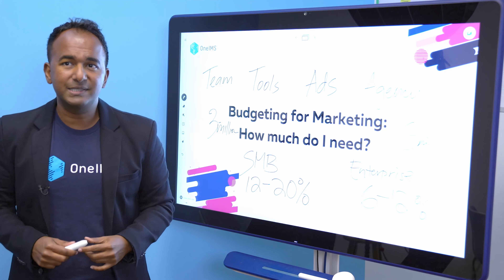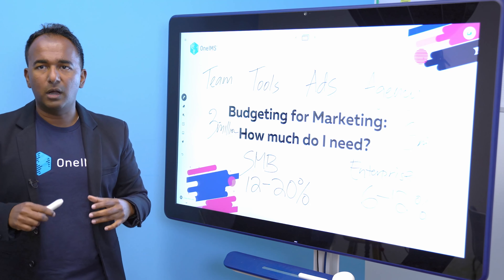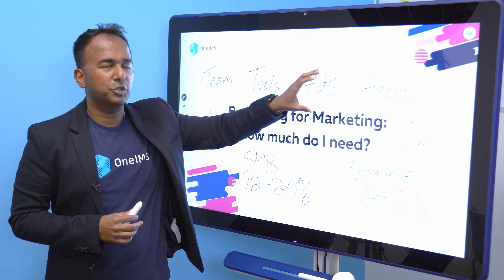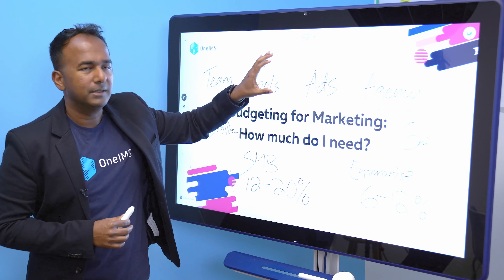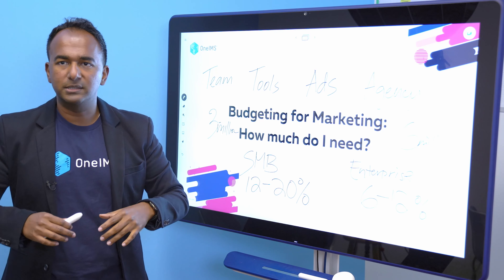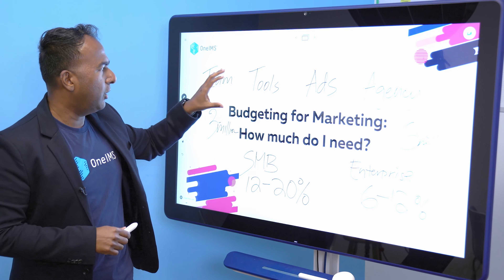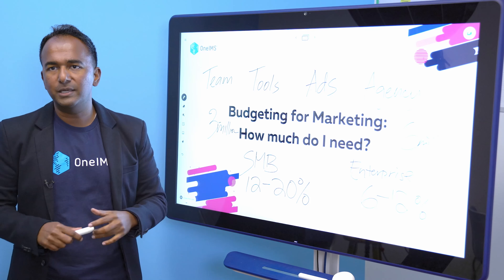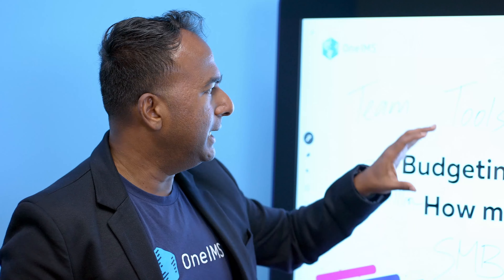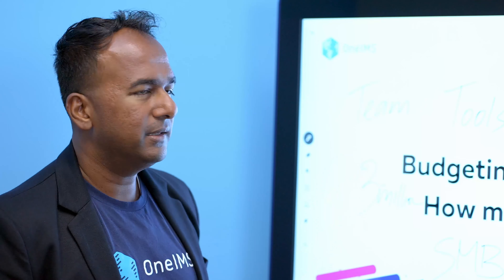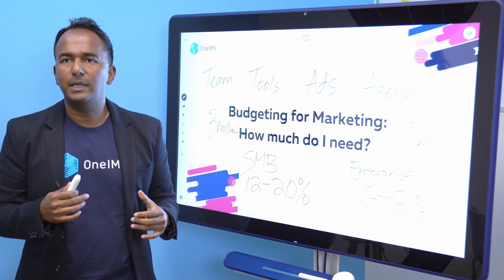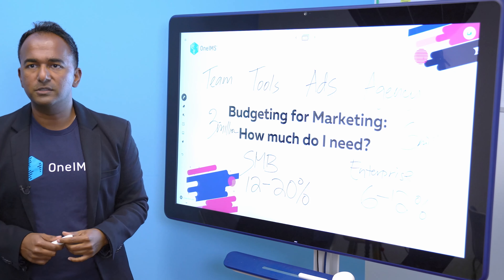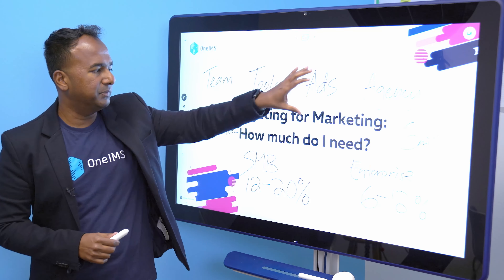Most of the time, our conversations with clients are about investing a certain percentage in agency management fees, the ads required to generate the number of leads, and any tools required — marketing technology, marketing automation, email, lead nurturing, lead scoring, CRM. And finally, the amount of internal resources needed — maybe a person to approve or create content — is how we divide up the budget.